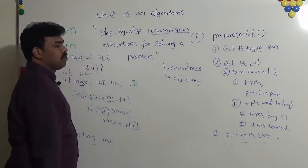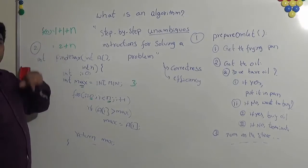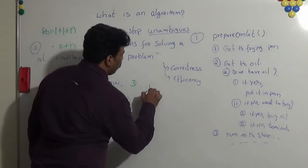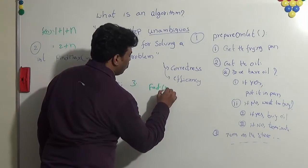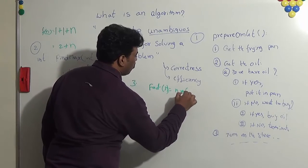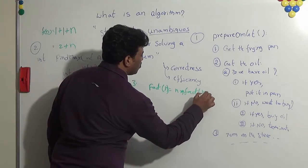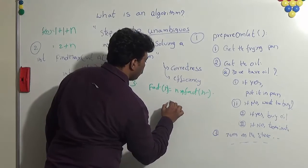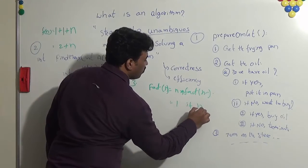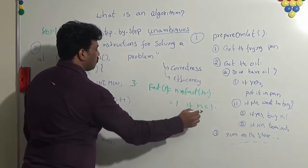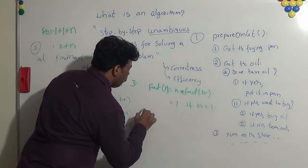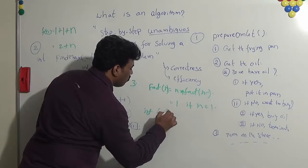So let us see another example where we can convert the function to a code. For example, we all know factorial of n is equal to n into factorial of n minus 1. Just for a simple example, it is equal to 1 if n is equal to 1.